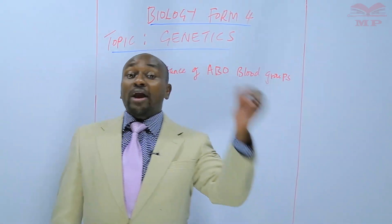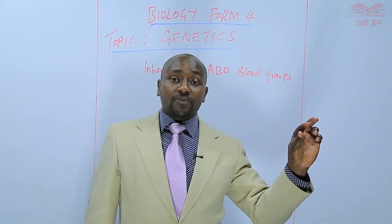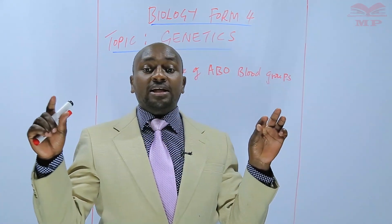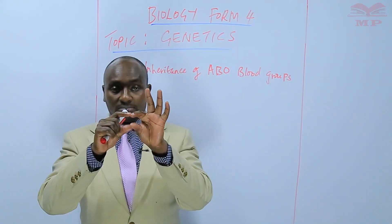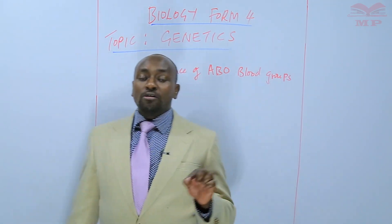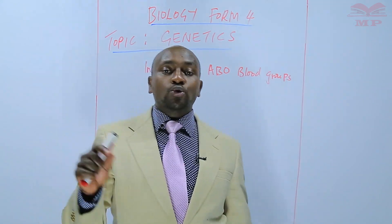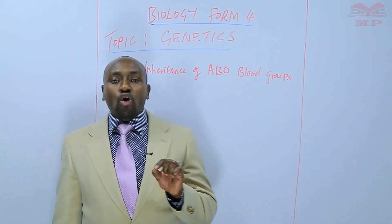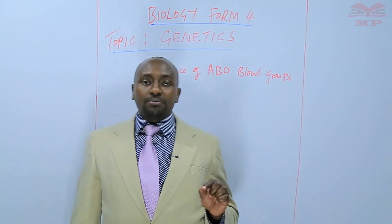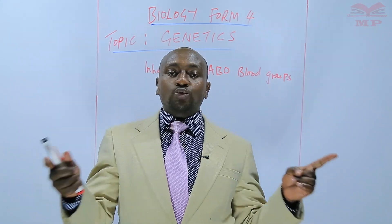Where there is the existence of the gene for blood group A together with the gene for blood group B, we get blood group AB. Therefore, we can say that the gene for blood group A and the gene for blood group B are co-dominant. Co-dominant means that they both express themselves when they come together.